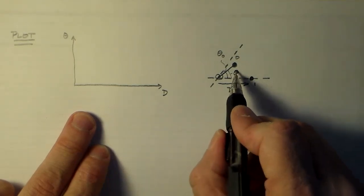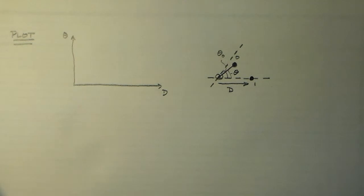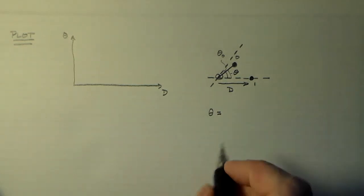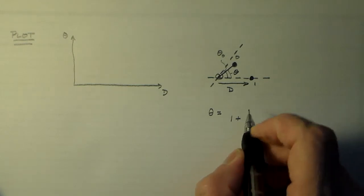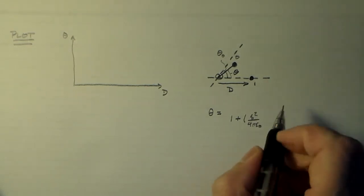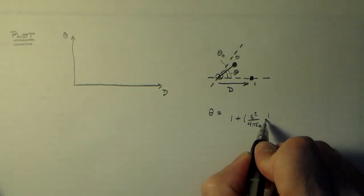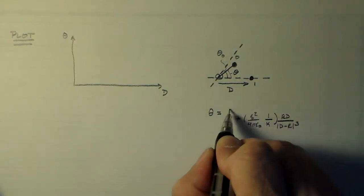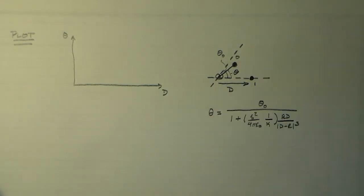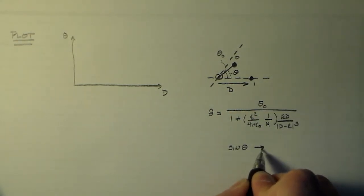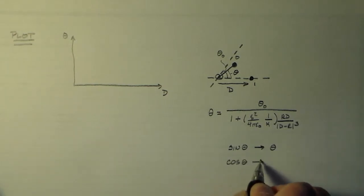And what I'm going to plot is what is this theta as I move this back and forth. And what we saw for our theta in a very small angle approximation was 1 plus some constant q squared over 4 pi epsilon naught, and I forgot that 1 over k, and then rd over d minus r cubed, and that's all over this theta naught. Now this is for a small angle approximation. And by that I said all sine thetas go to theta and cosine theta goes to 1.